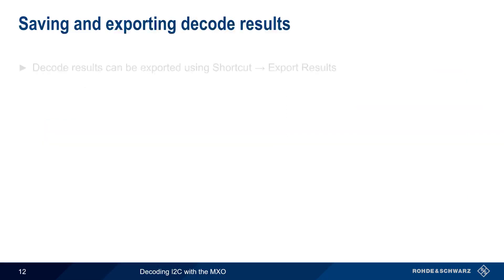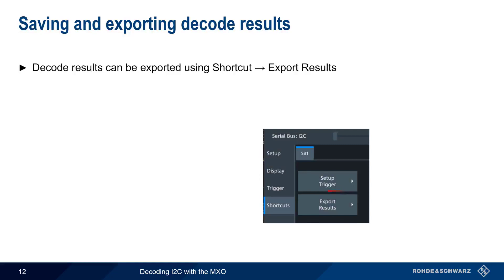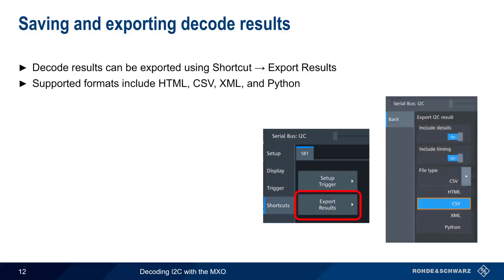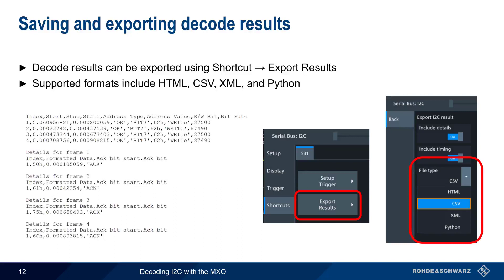Decoded results can be exported by choosing 'Export Results' from the Shortcuts menu. The supported export formats include HTML, CSV, XML, and Python. The CSV example shown here displays the type of data included in the export: timing information as well as the decoded values for each individual frame.